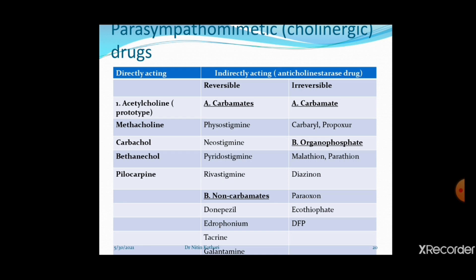Cholinergic drugs that act directly on receptors are called directly acting cholinergic drugs or directly acting parasympathomimetic drugs — they act upon muscarinic and nicotinic receptors. The second group of drugs increases the duration of action of acetylcholine in the synaptic cleft; they do not act upon the receptor itself. This increased concentration of acetylcholine then acts upon muscarinic and nicotinic receptors, so these are indirectly acting cholinergic drugs.